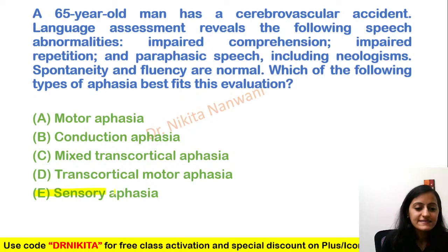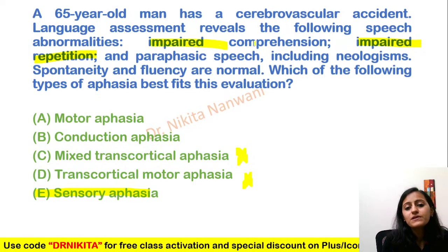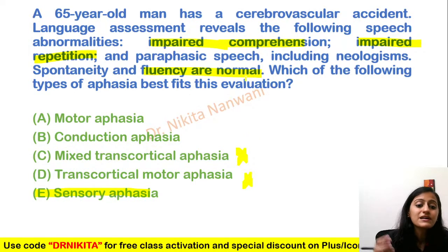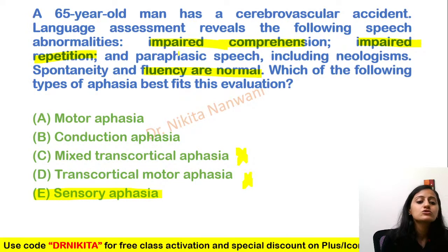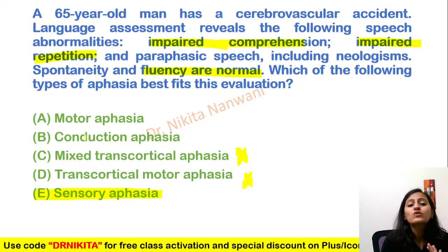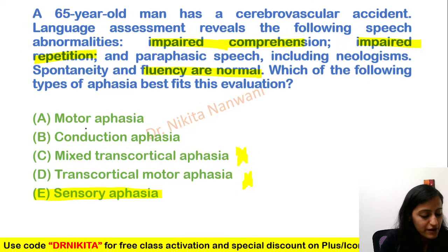Next MCQ: impaired repetition — so not transcortical. Comprehension is impaired, fluency is normal — so only Wernicke's is gone. This is sensory aphasia. In motor aphasia, fluency is also affected; in conduction, only repetition is gone — so this is confirmed as sensory aphasia.